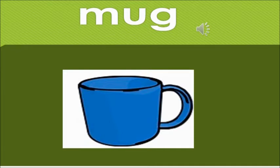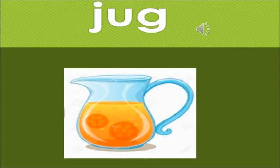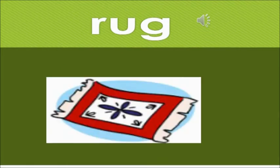Now the next one is J, UG, JUG. The sound of J is 'j' and UG, together it becomes JUG. So what is JUG? JUG is also another container where we store our juice or water when we are serving it to somebody. That is called JUG.